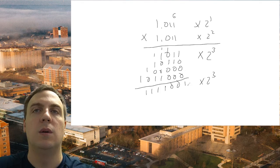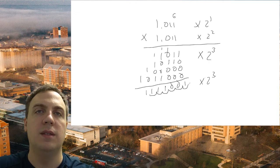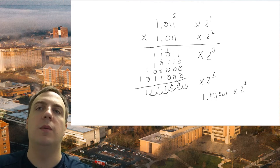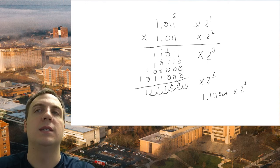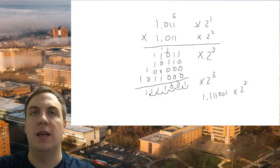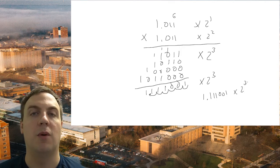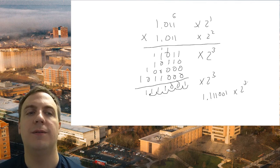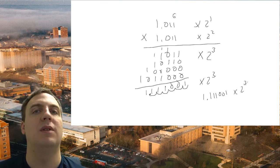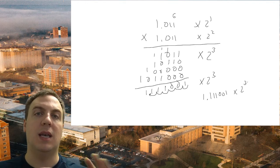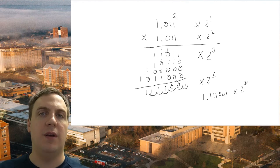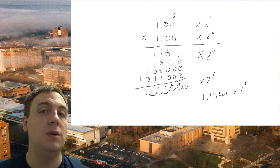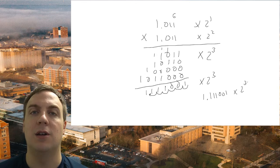After multiplying, we have six decimal digits total (three from each operand), so we move the decimal six places left to get 1.110011 times 2 to the third. Moving the decimal three places right gives the final value. For sign: we always multiply positive numbers and determine the sign afterward — two positives or two negatives give positive; mixed signs give negative.